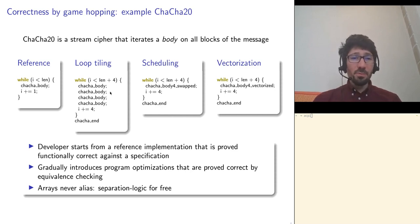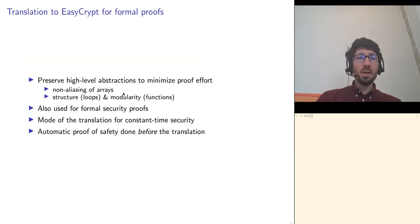In this proof, we are concerned by proving that different instructions can be reordered because they are independent. In this case, separation logic is very useful. To sum up on the verification infrastructure, we have a translation from Jasmin program to EasyCrypt that preserves the high-level abstraction and structure of the code to minimize the proof efforts. This allows proving formal security of the implementation, but also we can use this to prove constant-time security. Moreover, there is a safety checker that allows checking the program safety before doing verification.